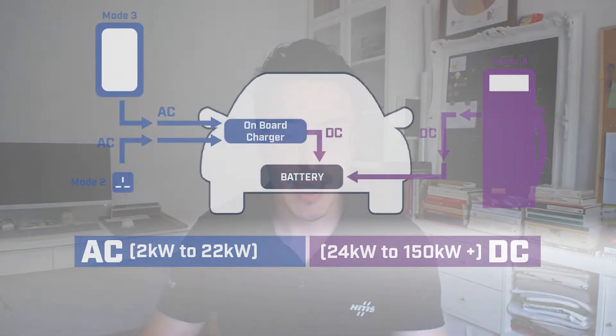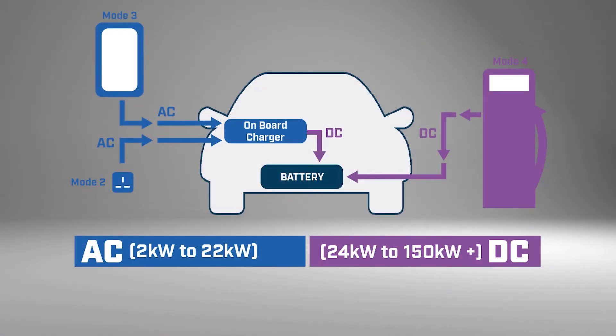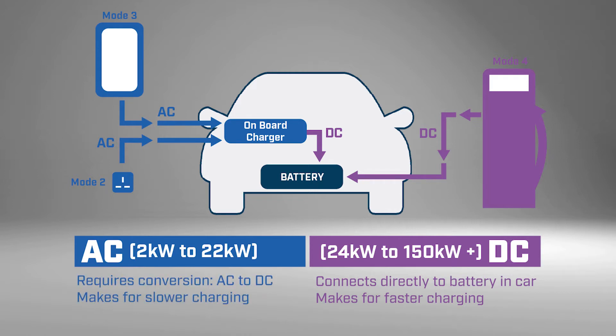We have AC charging and we have DC charging. DC charging basically connects directly the electric connection to the battery management system inside of the car. If we are looking at AC charging, we need to have something in between which sits in the car and translates the AC signal to the battery management system.